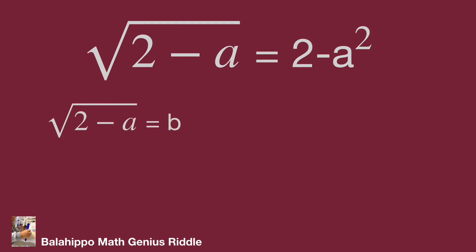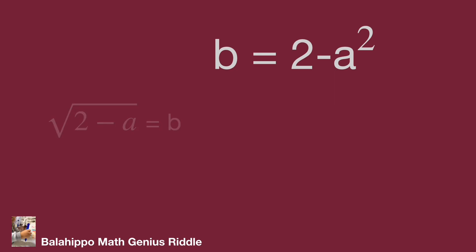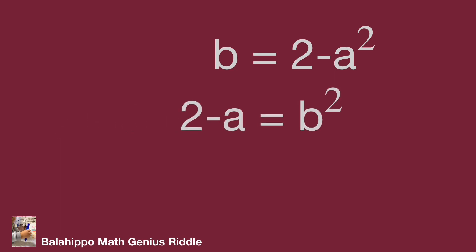Let √(2−a) = b. Then the equation transfers to b = 2 − a². Squaring both sides of √(2−a) = b gives the new equation: 2 − a = b².